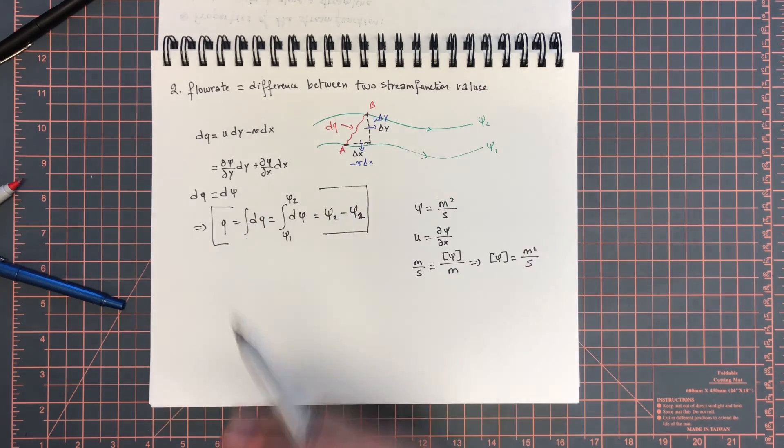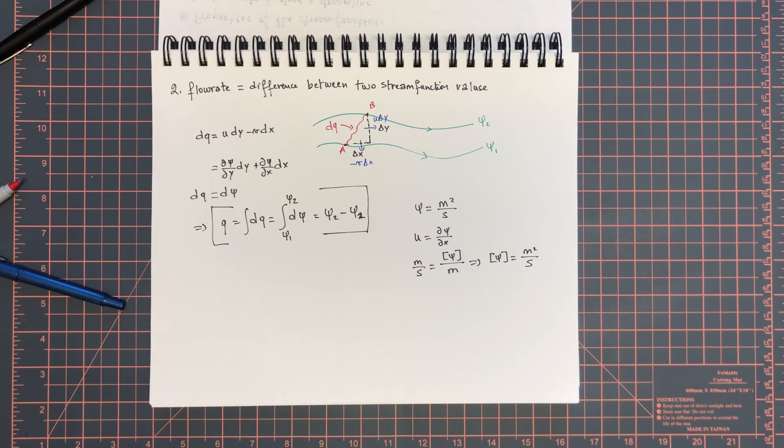That's volume flow rate per unit length - in this case we had the depth assumed to be unity. So that introduces the stream function. Next we're going to take this concept that simplifies and reduces the velocity field in 2D to a single variable and plug that back into the Stokes equation and see what we can do with that.